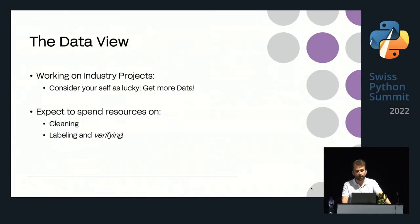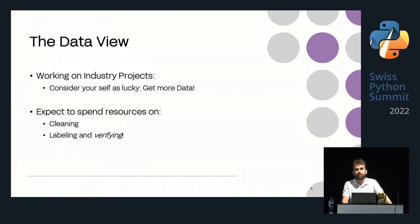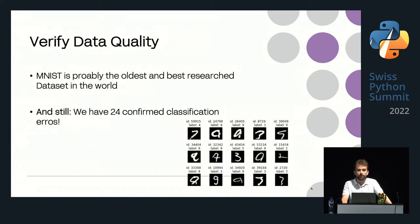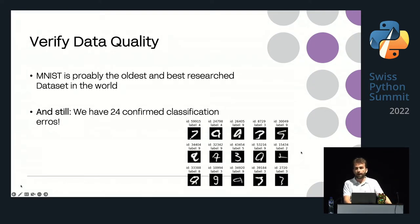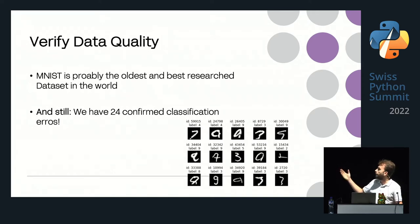Consider yourself lucky working on industry projects — getting more data helps in most cases a lot. But don't underestimate the effort required to clean, label, and verify data. We tend to underestimate how difficult it is to build a good dataset. Even the biggest publicly available datasets used for competitions are not perfect — there are at least 24 confirmed classification errors in the MNIST dataset.